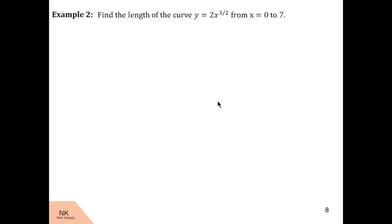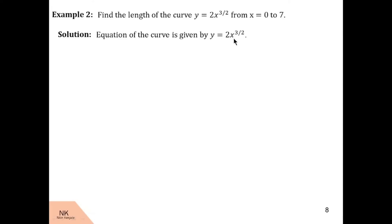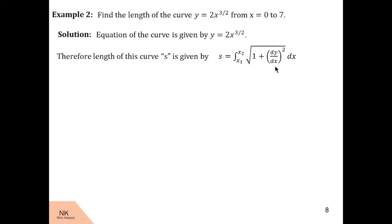In this example we are given the x-coordinates of points A and B, so we can consider these as lower and upper limits of the integral. The equation of the curve is y = 2x^(3/2), which is of the type y = f(x). So if s is the length of the curve then s is given by this formula, with x1 = 0 and x2 = 7. Now dy/dx = 2 · (3/2) · x^(1/2); the 2s cancel, so dy/dx = 3x^(1/2).